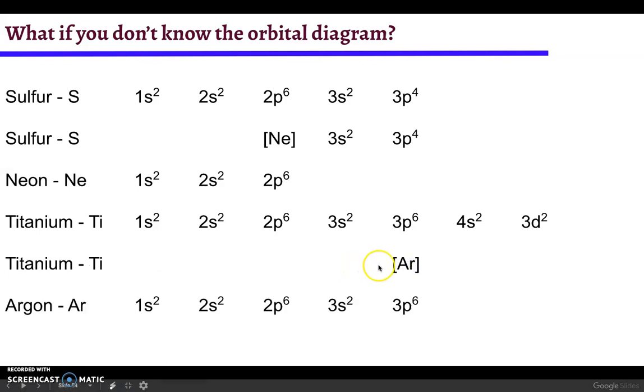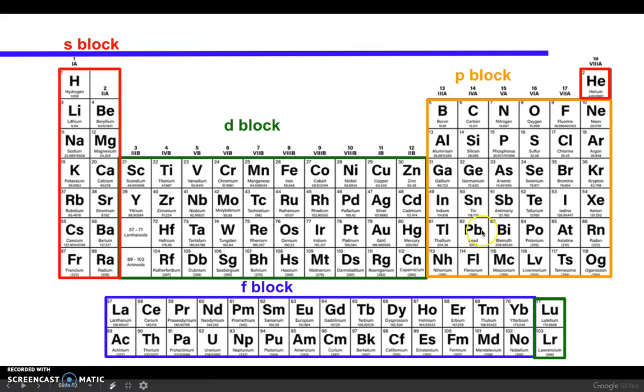So the abbreviated way to write the electron configuration for titanium would just be to start with argon and then write 4s2 and 3d2. So 4s2 3d2.